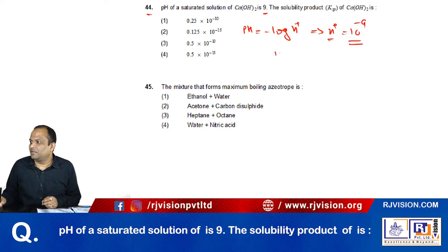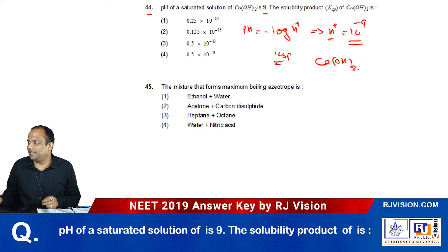Now we have to find out the Ksp. Calcium hydroxide dissociates like this: Ca 2 plus plus 2 OH minus.